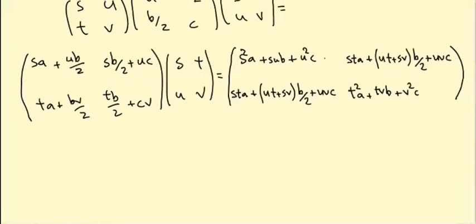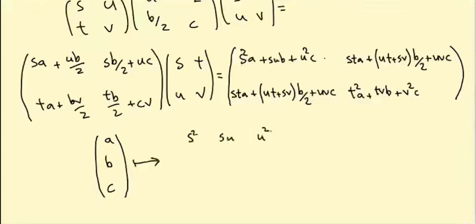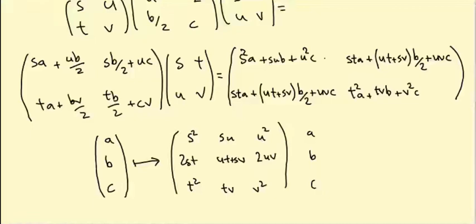Let's think about this differently. Write the quadratic form as a three-vector (a, b, c). After the transformation by the element of SL(2,C), the new a is (s², su, u²) times (a, b, c); the new c is (t², tv, v²) times (a, b, c); and the new b is (2st, ut+sv, 2uv) times (a, b, c). So (a, b, c) transforms according to this 3×3 matrix. The factors of 2 in the second row come from the fact that this entry is supposed to be the new b over 2.